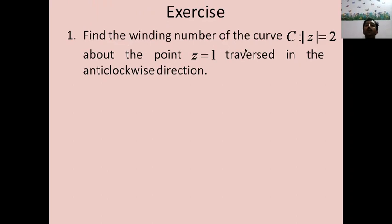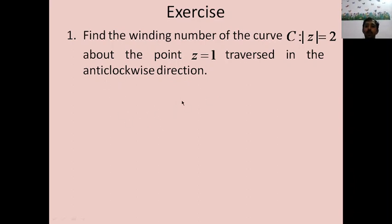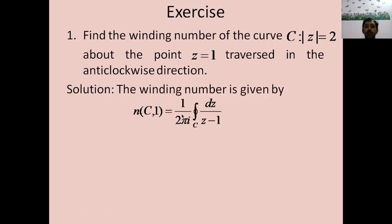First problem: find the winding number of the curve C: |z| = 2 about the point z = 1, traversed in the anticlockwise direction. C is a circle with center at the origin and radius 2, and z = 1 is an interior point of C. Geometrically, the curve traverses exactly once around z = 1 in the anticlockwise direction, so the winding number is expected to be 1. We verify this using the formula: n(C, 1) = (1/2πi) ∫_C dz/(z − 1).